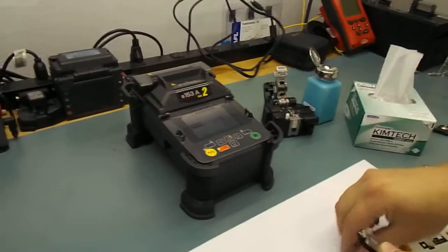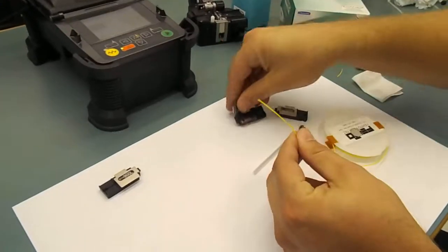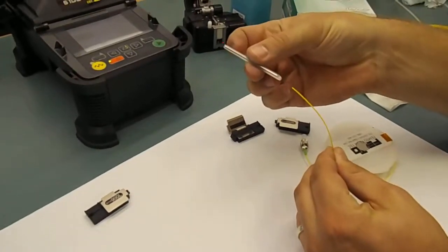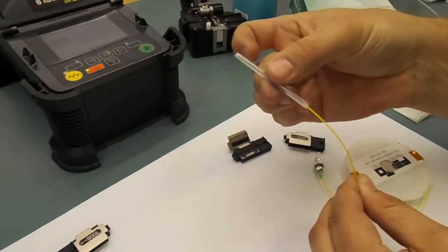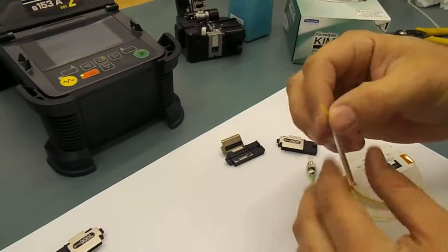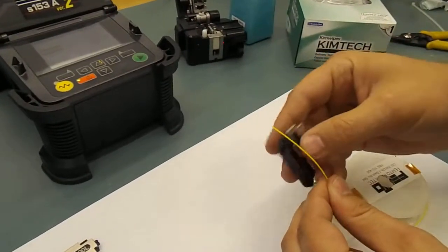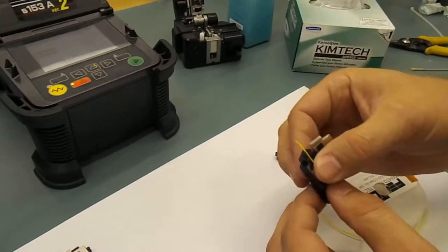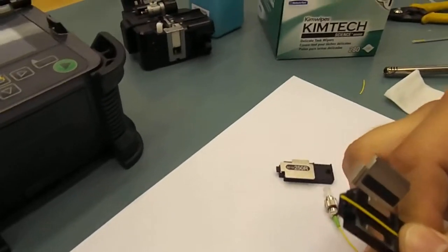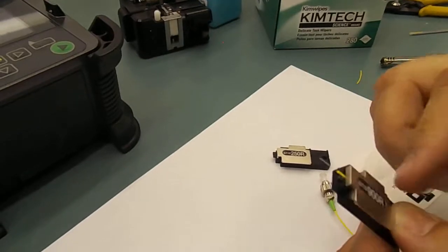I actually missed a step there. I was supposed to put this splice sleeve on before we prep all that. But it's not really a big deal as long as we don't break the fiber when we're sliding it over.